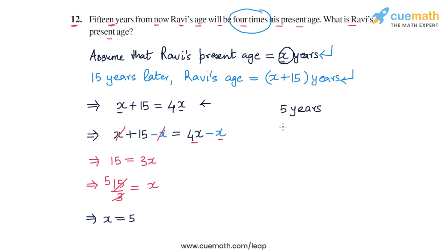Because 15 years later his age will be 20 years, and 20 is 4 times 5. So the answer to the question is that Ravi's present age is 5 years. And this completes question number 12.